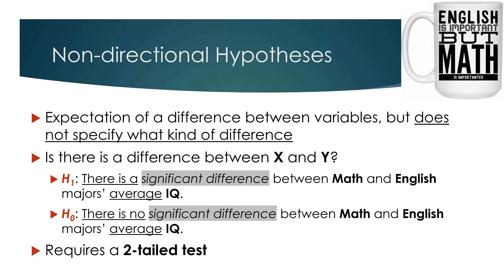The last detail for non-directional hypotheses is that they require you to use a two-tailed version of the statistic you're going to be calculating. You don't need to know how that works yet — it'll come up later. But make sure you know and memorize that a two-tailed test is connected with non-directional hypotheses. If you're working with non-directional hypotheses, the stat you're using has to be two-tailed.